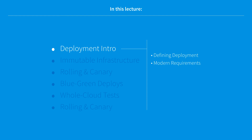Once we define deployment, we need to briefly talk about how modern requirements have changed the nature of deployments over time. Because the business requirements relating to deployment have changed over time, we also need to look at how these changes in requirements have altered the challenges that technical people face when running deployments.